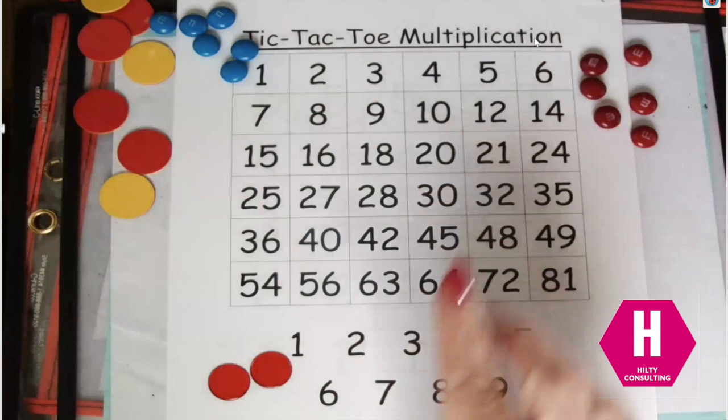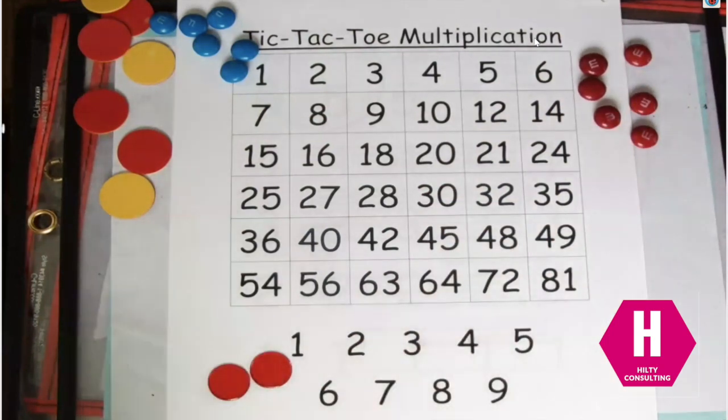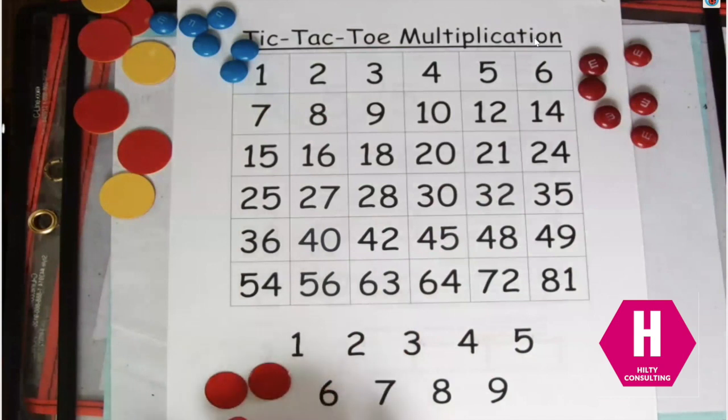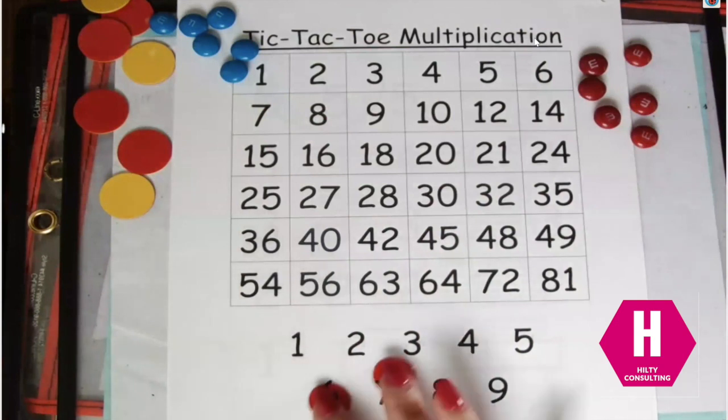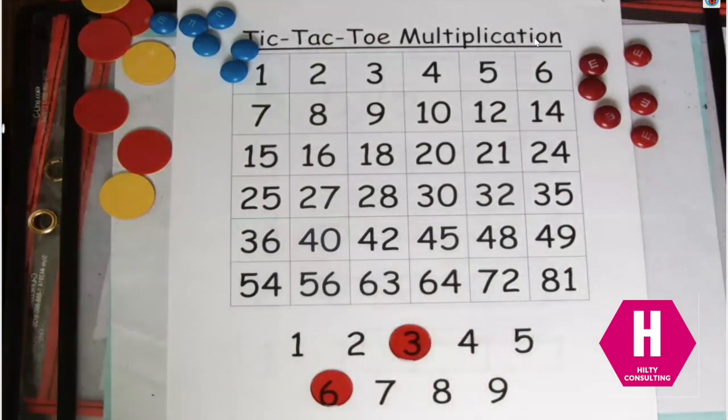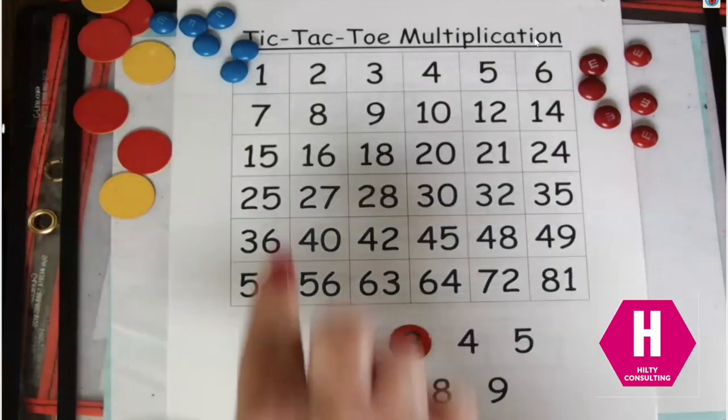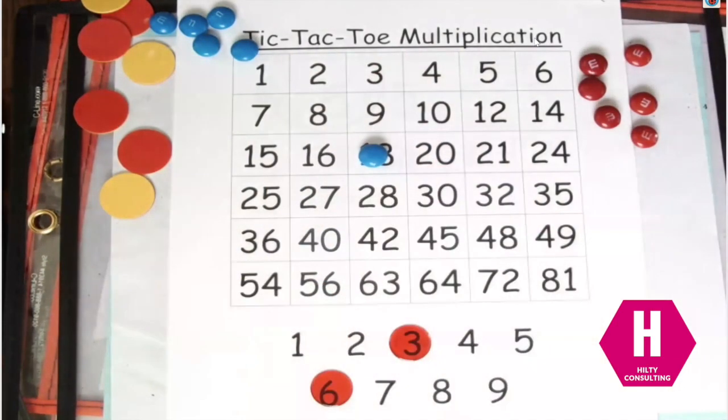All right, so to play Tic-Tac-Toe Multiplication you need the game board. I am going to go first and I'm going to take my bingo chip counters here and I'm going to cover over two factors. So I covered over the six and the three and I now have to give my multiplication sentence. Six groups of three equals 18, and so I'm going to put my counter over top of 18.